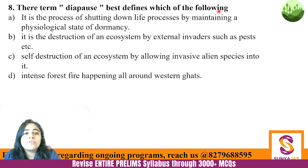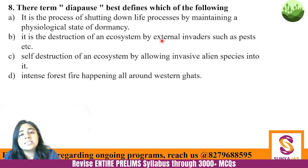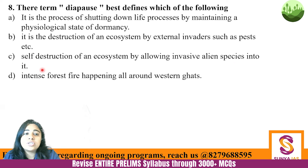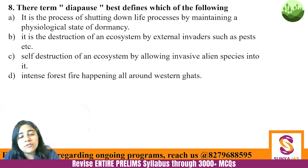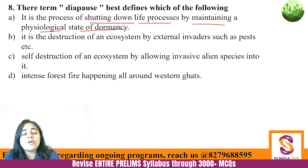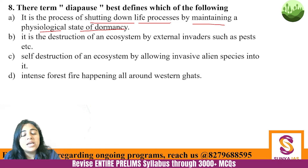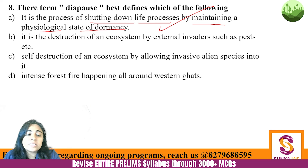The term diapause best defines: the process of shutting down life processes by maintaining a physiological state of dormancy. Physiological means changes inside the body, as opposed to morphological changes visible outside. Diapause is an automatic response when conditions are not favorable — life processes are shut down. So the first option is correct, and that is what diapause is. The answer is A.